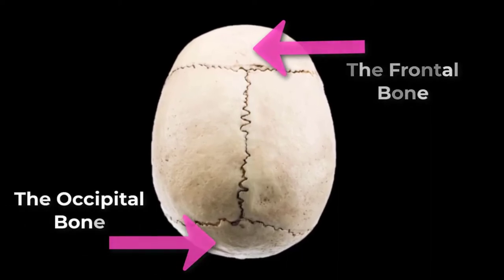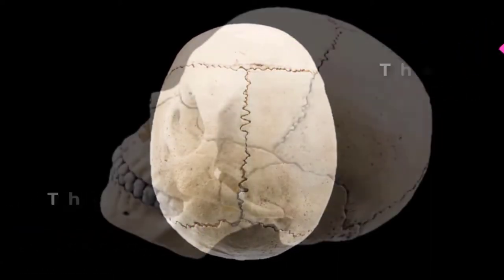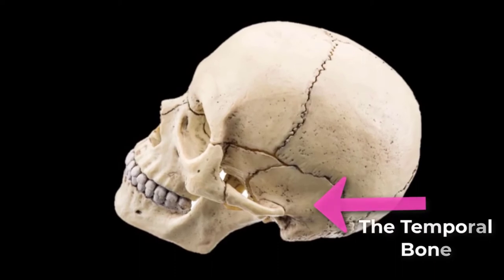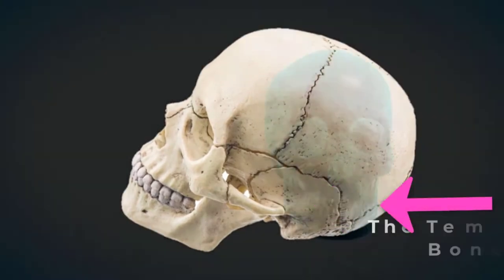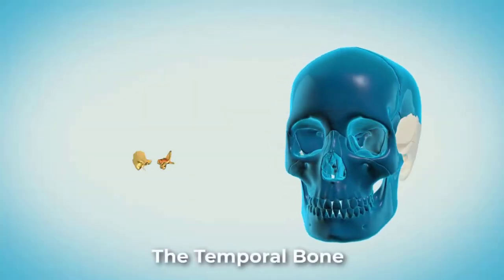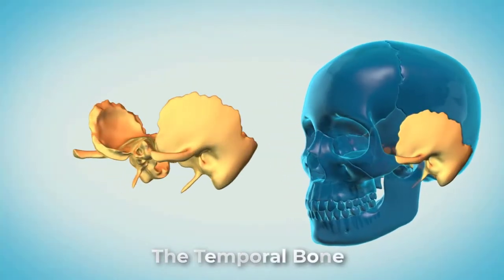and posteriorly by the occipital bone, and inferiorly by the temporal bone. The temporal bone forms the lower lateral side of the skull.